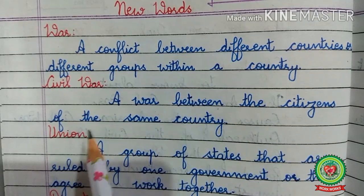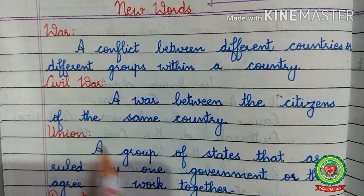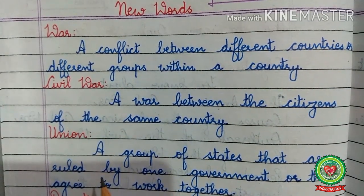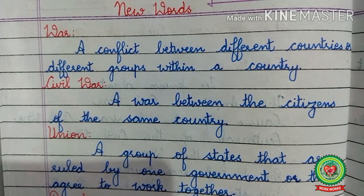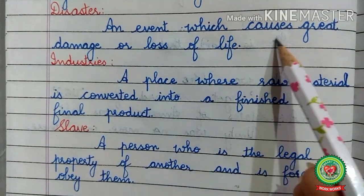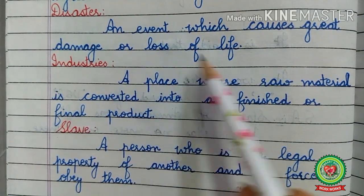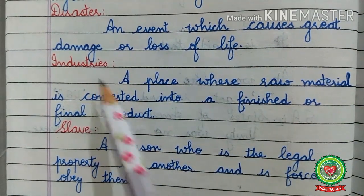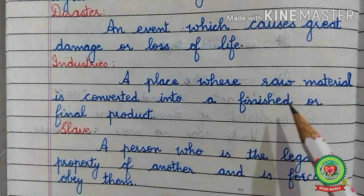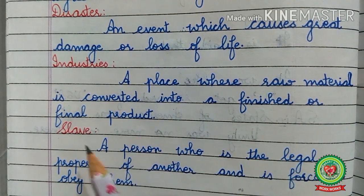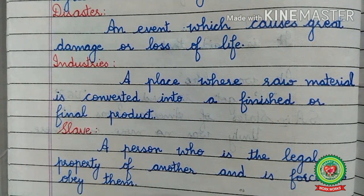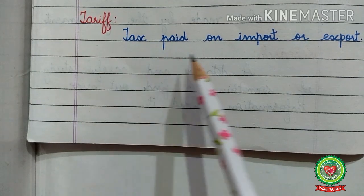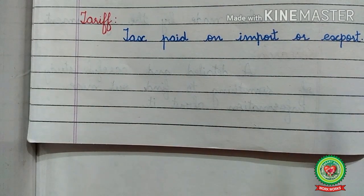Civil war — a war between the citizens of the same country. Union — a group of states that are ruled by one government or that agree to work together. Disaster — an event which causes great damage or loss of life. Industries — a place where raw material is converted into a finished or final product. Slave — a person who is the legal property of another and is forced to obey them. Tariff — tax paid on import or export.